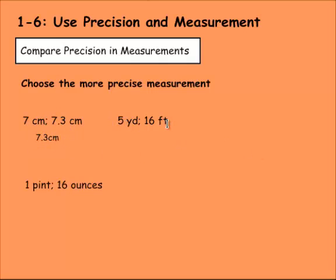Here we have five yards and then we have 16 feet. And in this kind of question, you want to ask, what is the smaller unit of measurement? The yard is much longer than the foot. So if you wanted to measure something and be more precise, you want to use the smaller unit. So the 16 feet would be the more precise measurement.